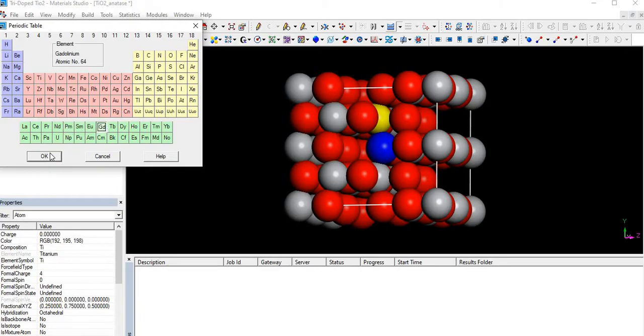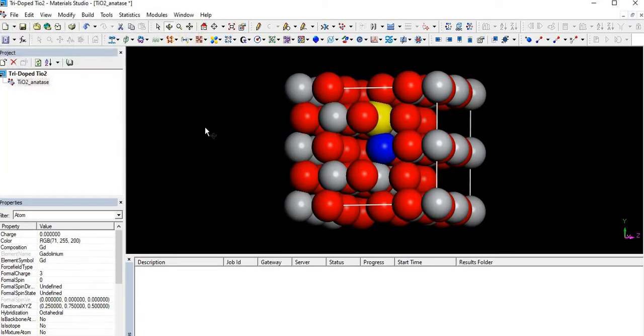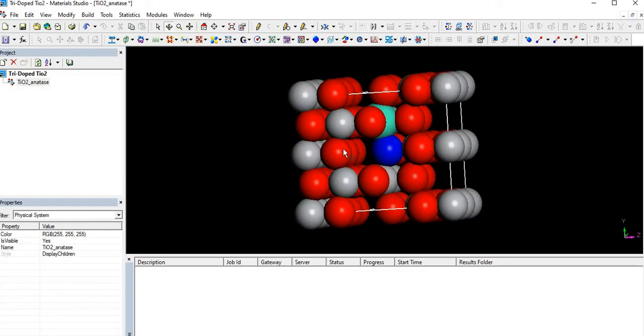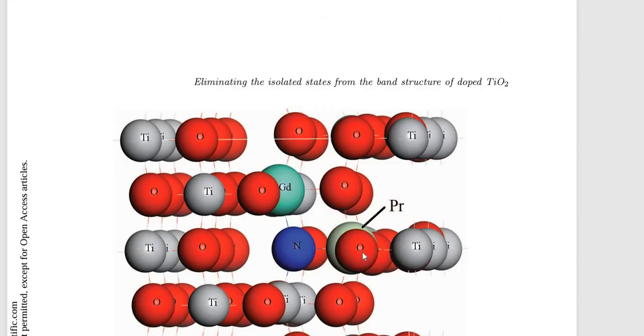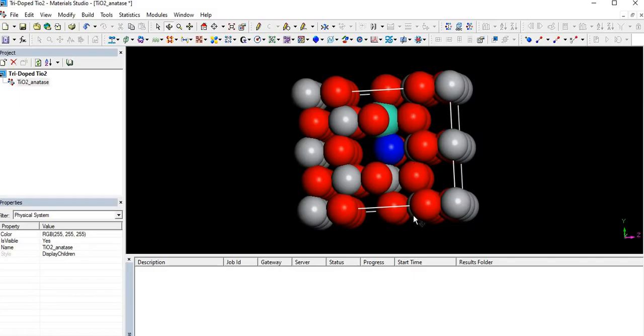Gd from the periodic table. This is how we use it. And now lastly we have to replace Pr with titanium atom.